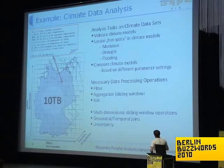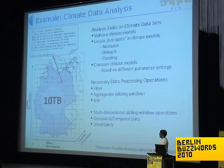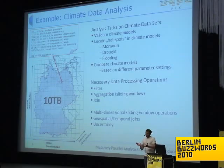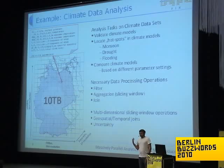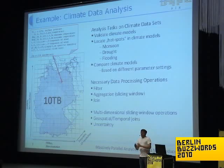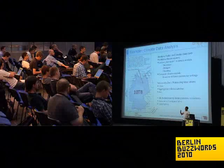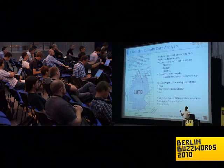One of the use cases we have in mind for this project comes from climate research. We have a collaboration with the Potsdam Institute for Climate Research Impact. Those guys try to figure out what impact climate change will have on the economy, on society, and all aspects of those impacts. They generate so-called climate models by simulating the climate in the future, and those data sets have quite a large size. The data sets have multiple dimensions — spatial dimensions and a time dimension — and for each point in this data grid they have certain parameters generated, such as temperature and humidity.